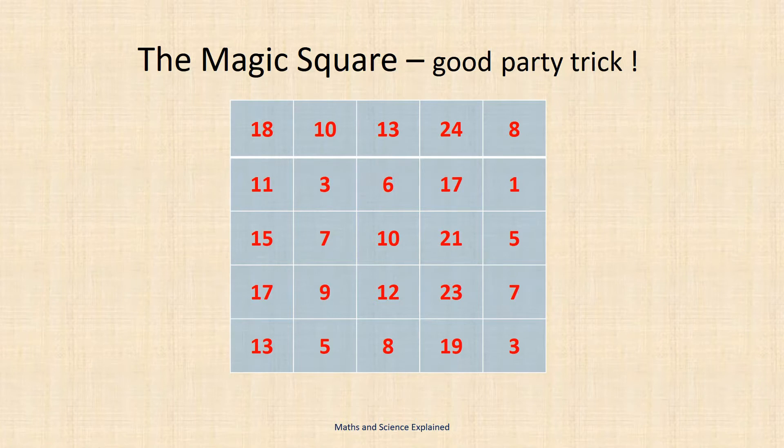In the traditional magic square the numbers in each row, column and diagonal add up to the same number. Here we have a different type of square with a seemingly random matrix however it possesses a magical property.